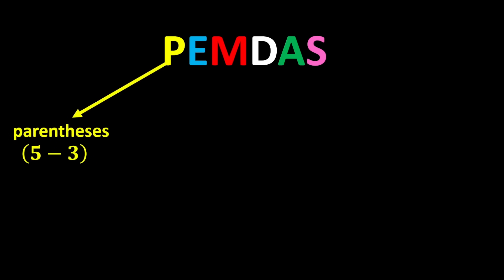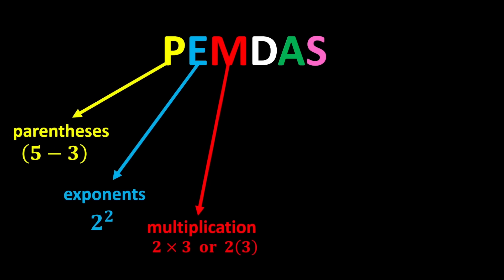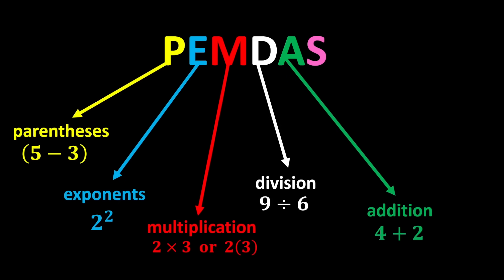P stands for parentheses. E stands for exponents. M stands for multiplication. D stands for division. A stands for addition. And S stands for subtraction. According to PEMDAS, we first calculate the parentheses, then we calculate the exponents, after the exponents we perform the multiplications and divisions, and finally we do the additions and subtractions.